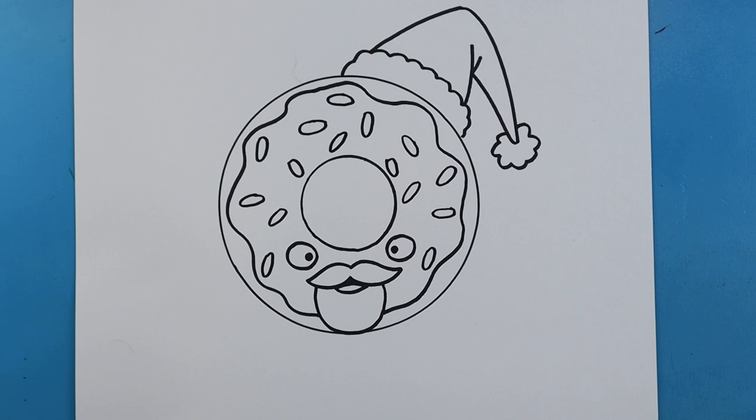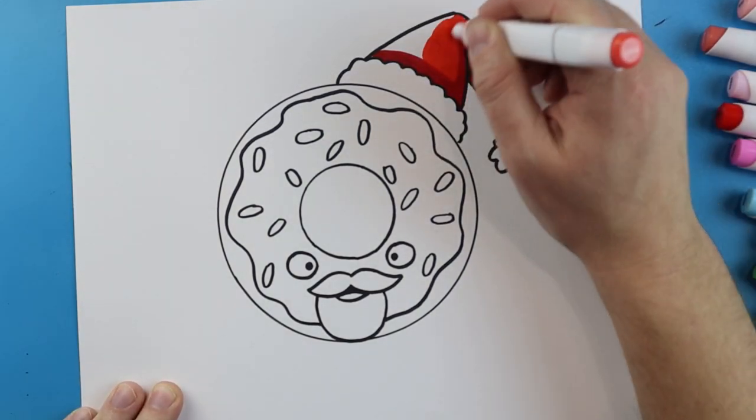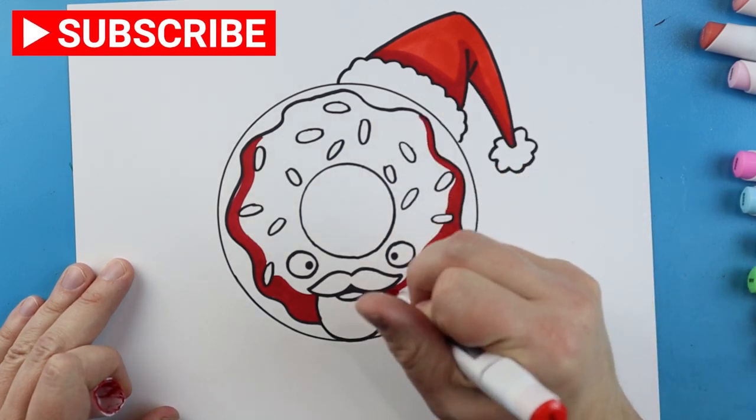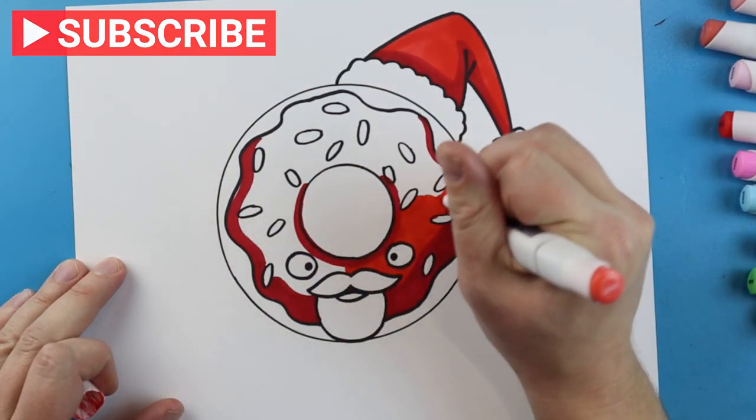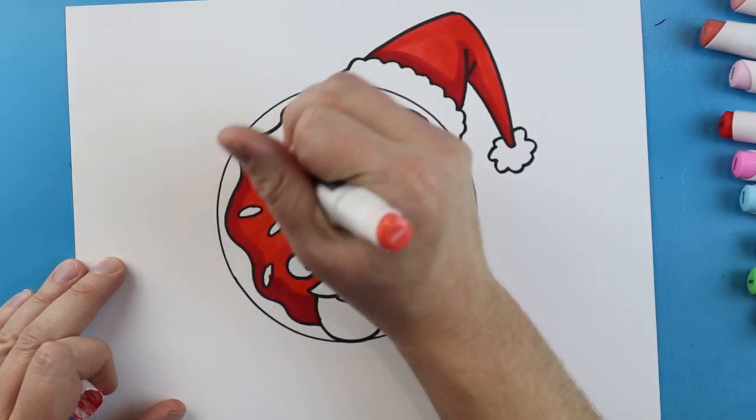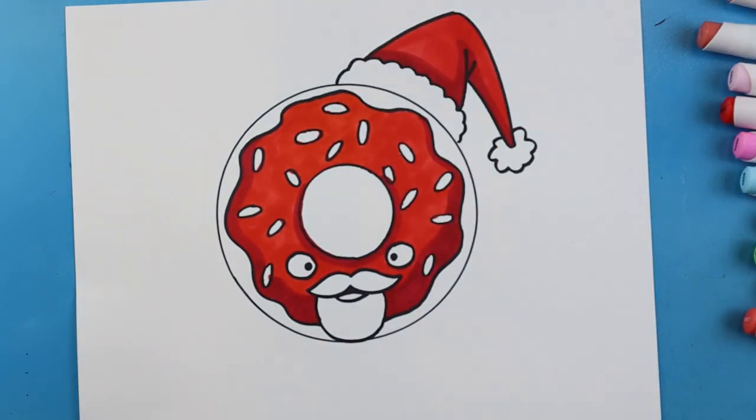And there you go. There is your drawing of a little Christmas donut. I'm going to fast forward and start coloring this. Thanks for watching. Hope you enjoyed. Bye.